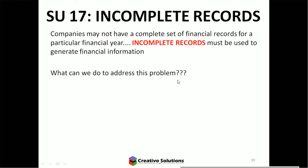Study unit 17 is the final chapter in the UNESA study guide, focusing on incomplete records — situations where companies don't have a completed set of financial statements and need to complete them.